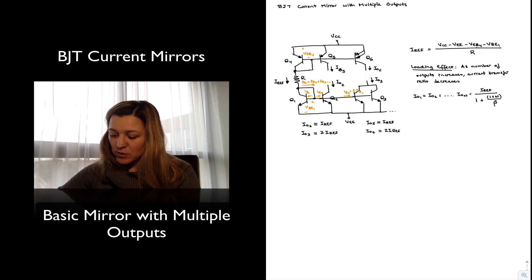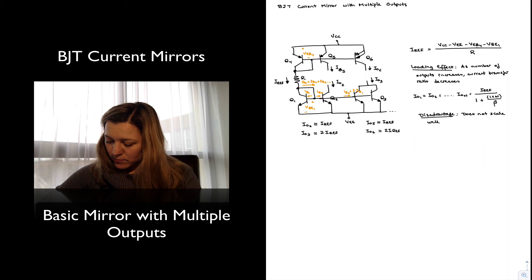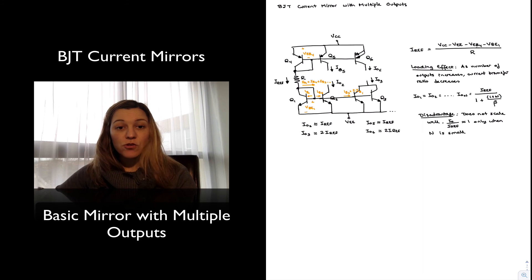And so basically this number becomes larger and farther from 1, that is the ideal transfer current ratio. So this will be one of the major disadvantages, that the circuit does not scale well. Iout over IREF approximately equal to 1 only when number of stages N is small. So I'm losing accuracy in my output current as I keep increasing the number of outputs.